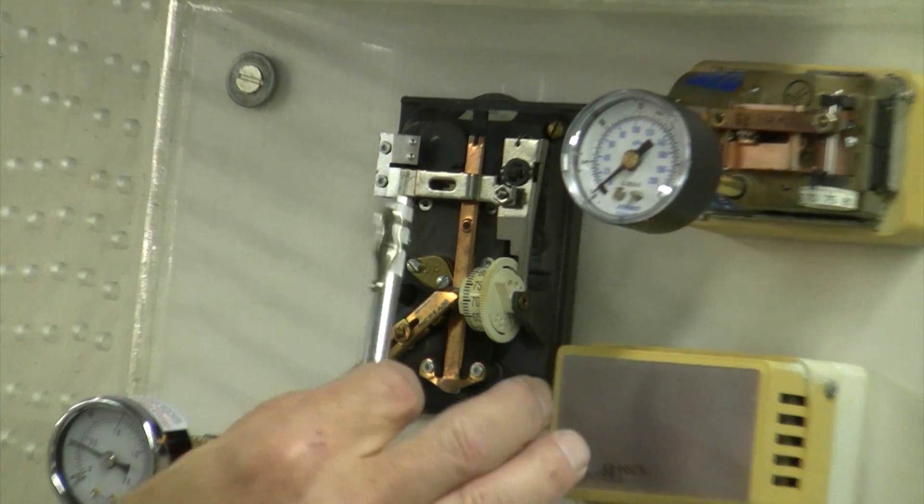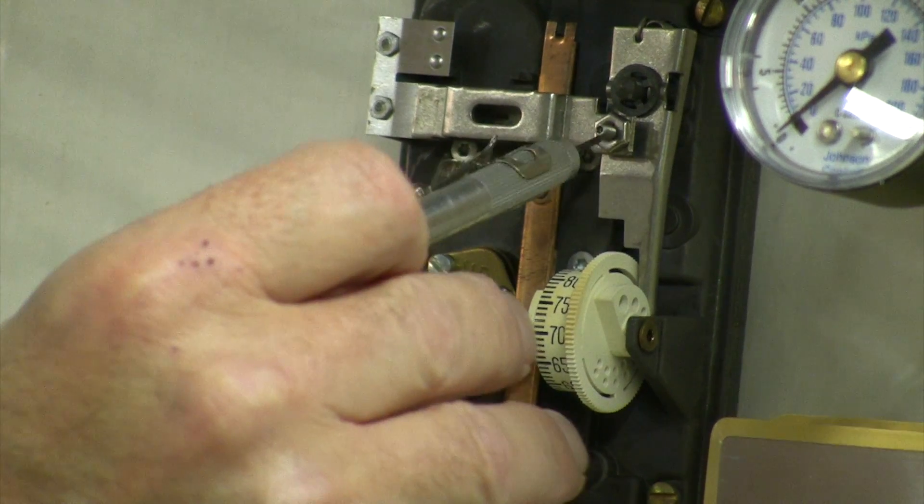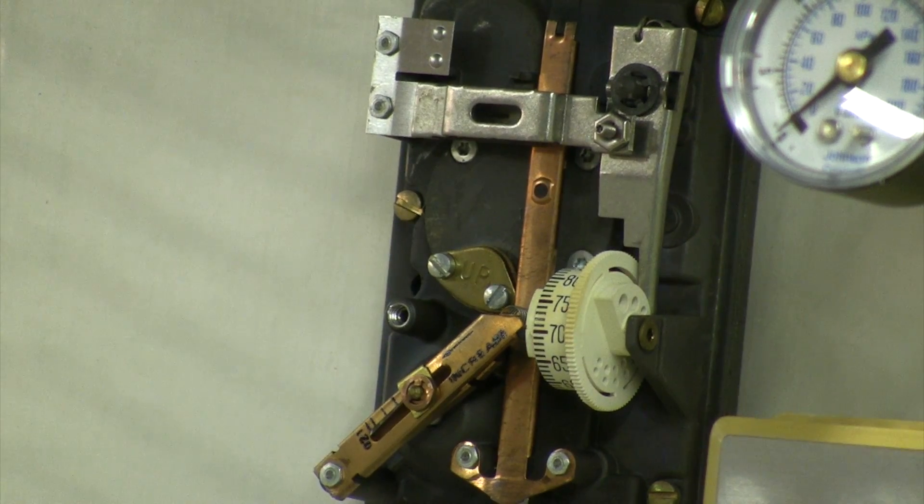The set screw for it is right here at the flapper assembly. There's a little nut, and then the set screw is right here.